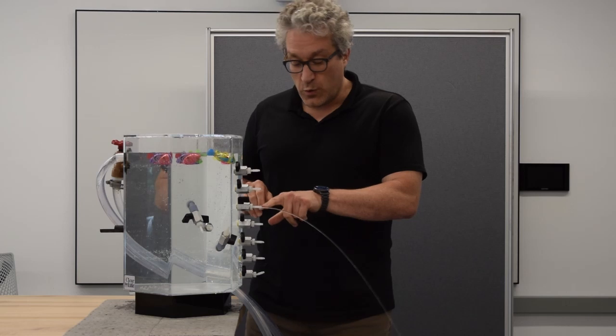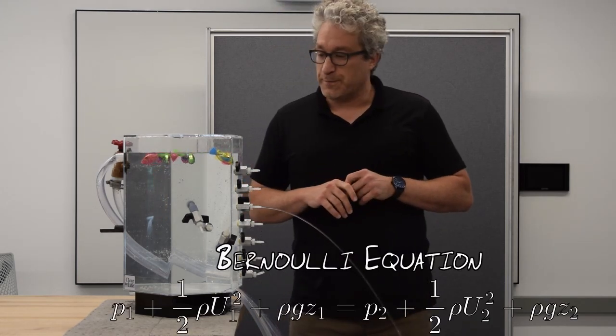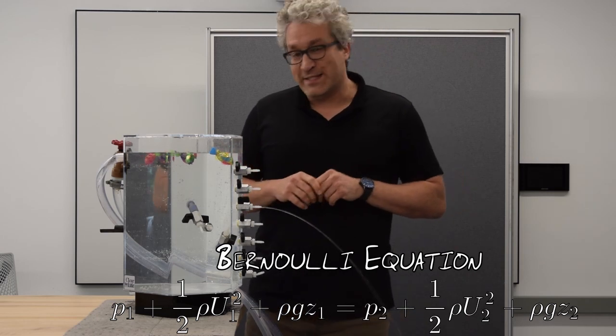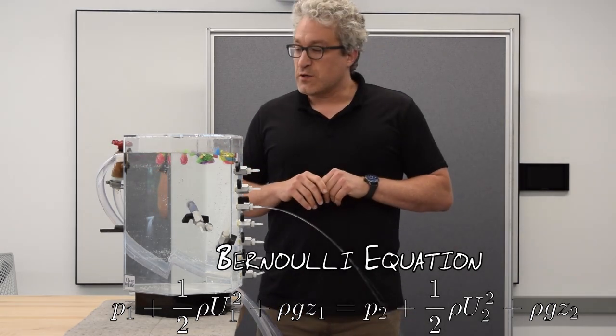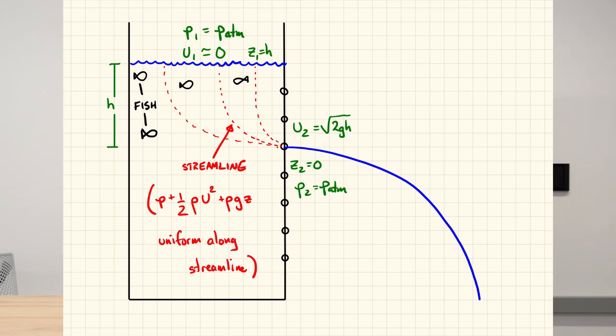We can estimate the speed with which the water issues into this jet by using the integral form of the Bernoulli equation. The Bernoulli equation is an inviscid flow relation that tells us how energy is exchanged between different forms: gravitational potential energy because it's high, pressure because it's been compressed, or kinetic energy because it's moving in space.